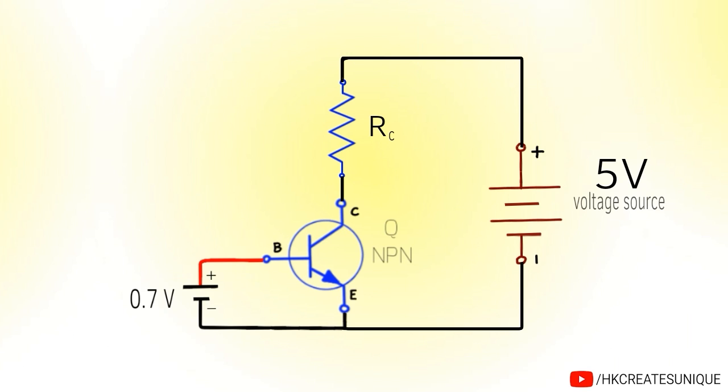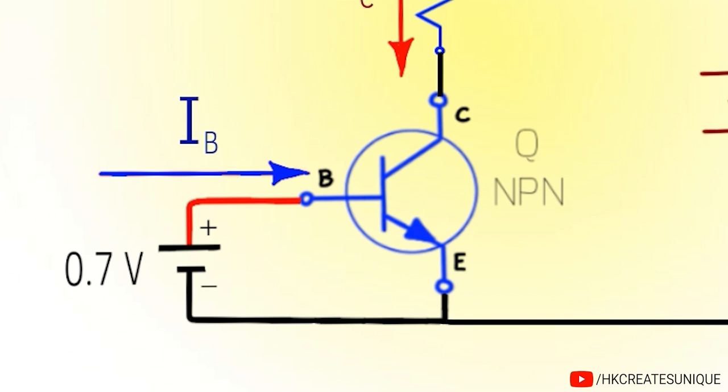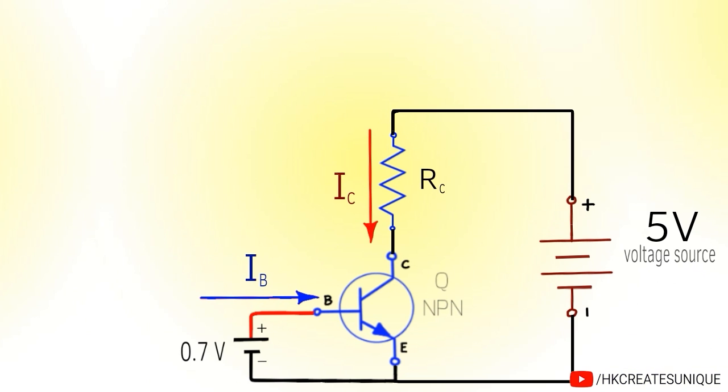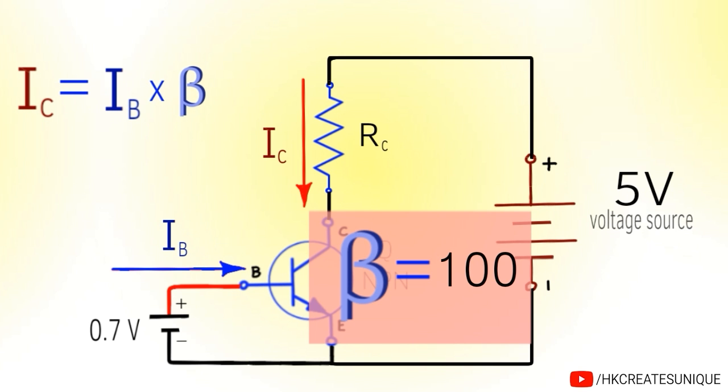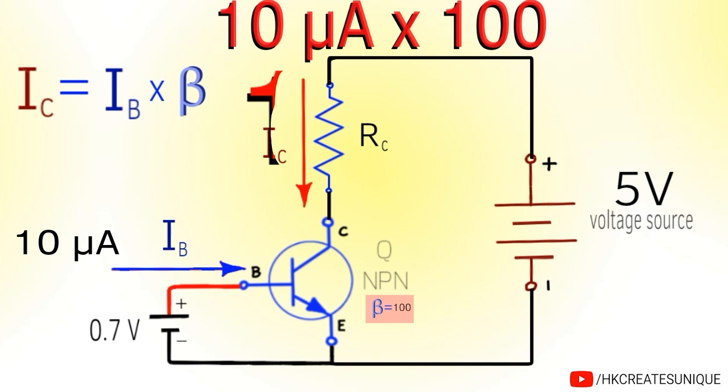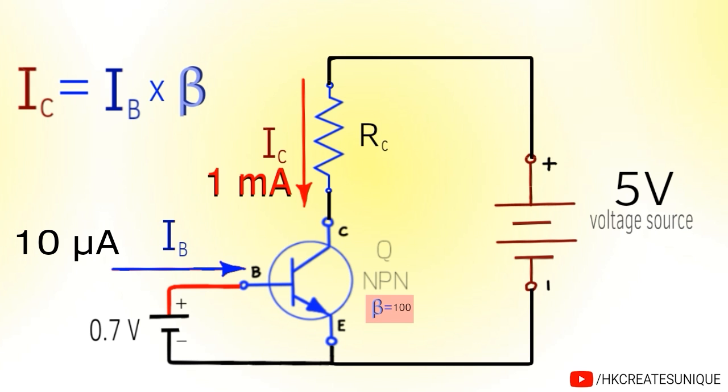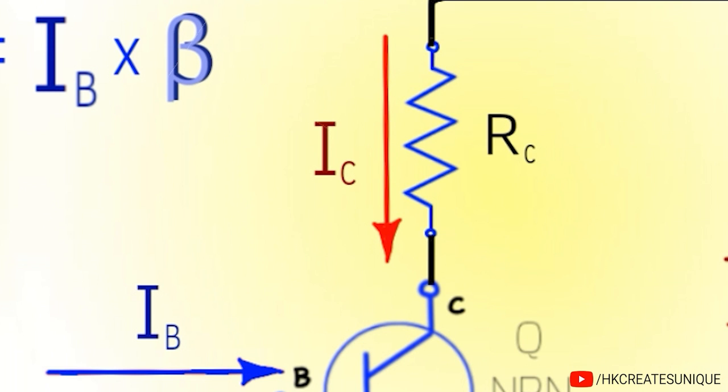In a transistor circuit, the current flowing through the collector directly depends upon the current flowing through the base to emitter of the transistor. The collector current IC is equal to the base current IB multiplied by a factor beta, which is called current amplification factor or current gain of a BJT. If a transistor has a current gain of 100, a small base current of 10 microamperes will be amplified into 10 microamperes multiplied by 100, which is 1 milliampere of current in the collector. The equation is valid only if the collector current is below the maximum current the load can take.